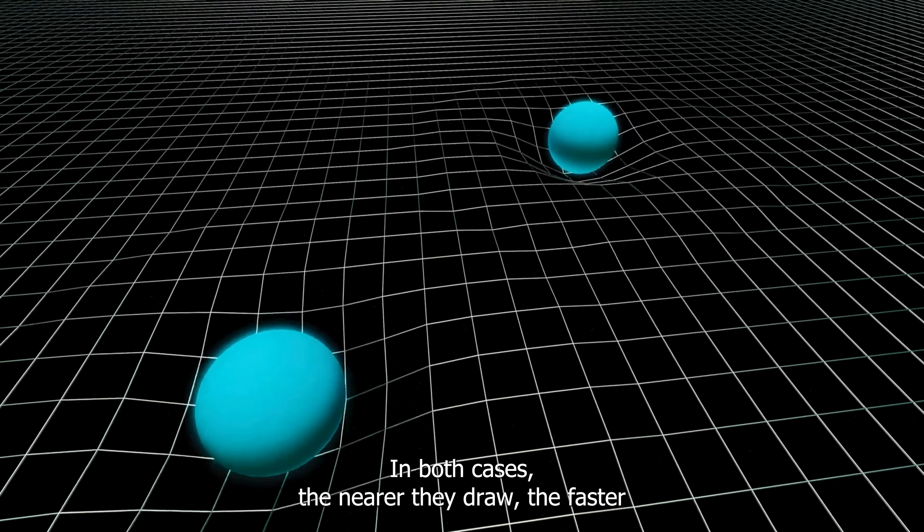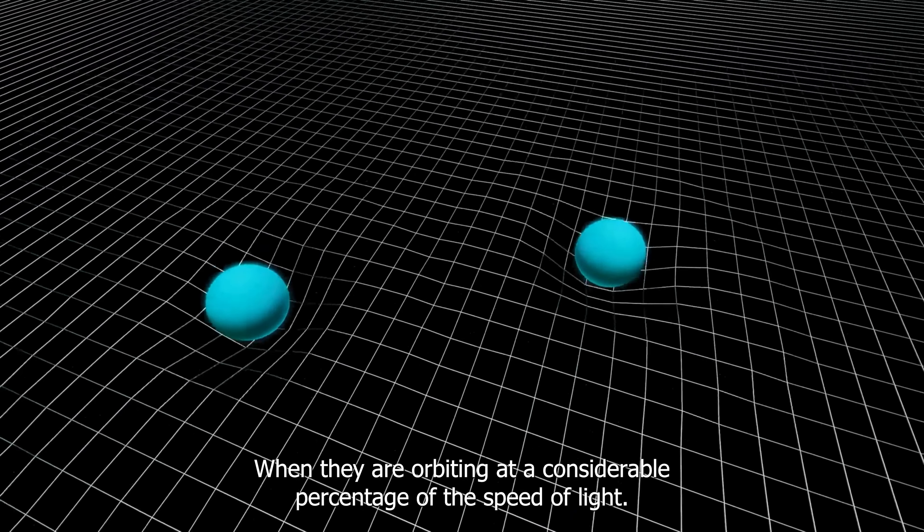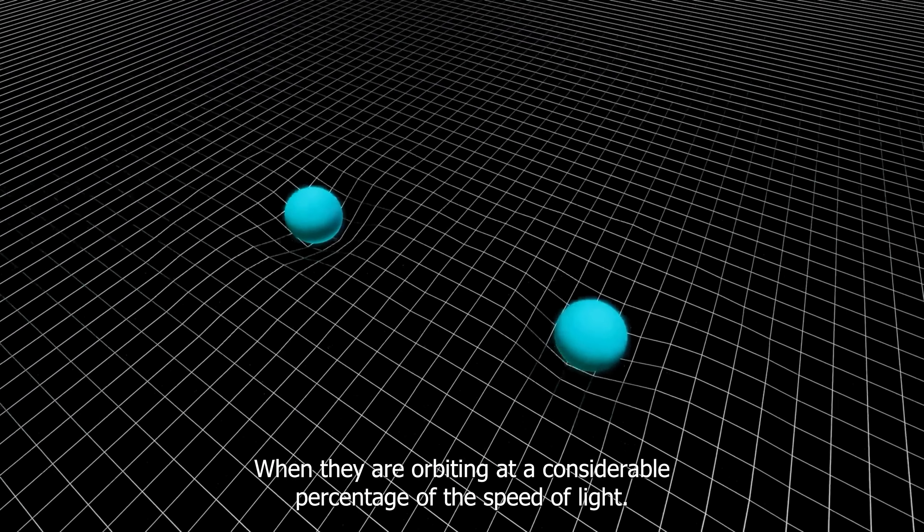In both cases, the nearer they draw, the faster they begin to circle each other until the milliseconds before they collide when they are orbiting at a considerable percentage of the speed of light.